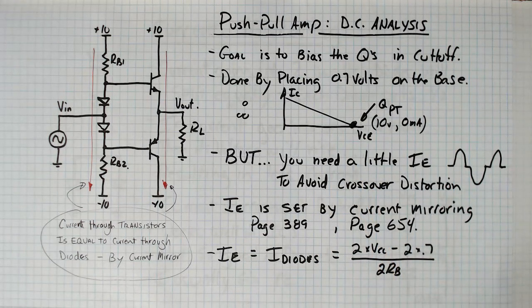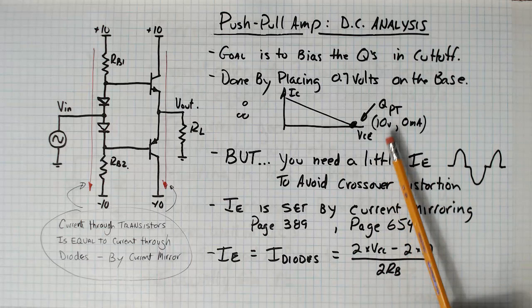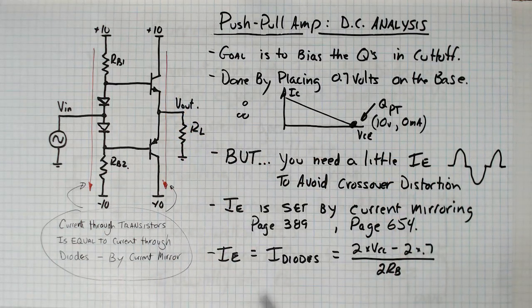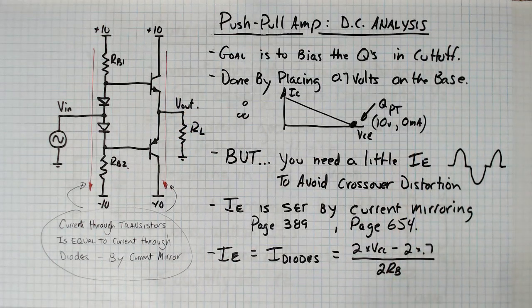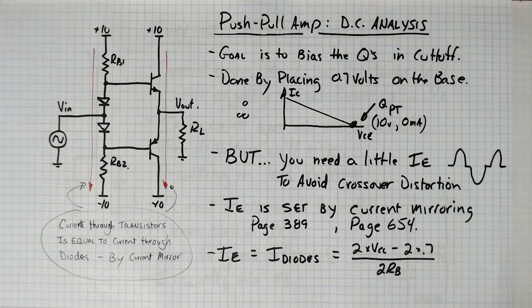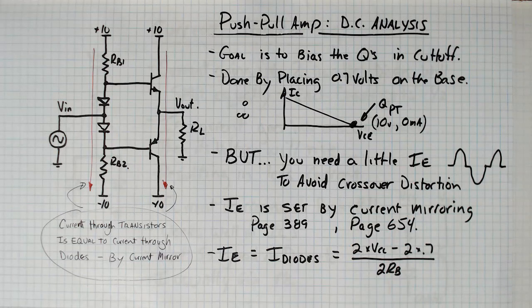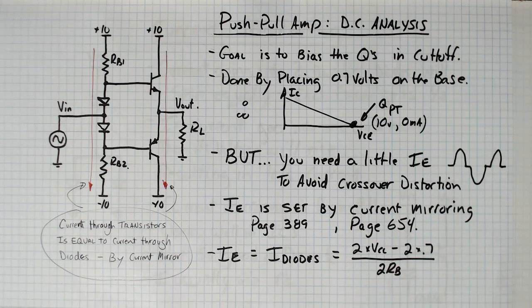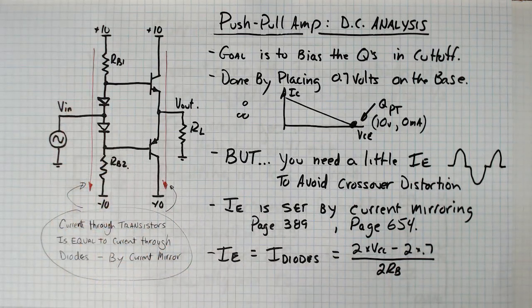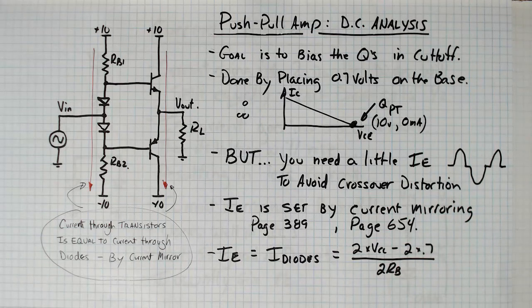So your biasing point is to try and get 10 volts across the transistor, 10 volts across the transistor, and close to 0 milliamps through it. But you need a little bit of emitter current in order to avoid crossover distortion. You don't want them to both be completely off when you start, because then you have to go up a little bit before you get any output. So you have these dead spots that I talked about in the previous video.